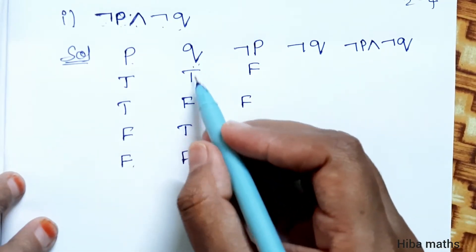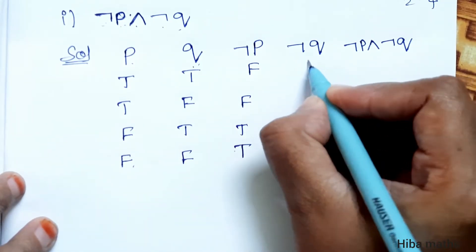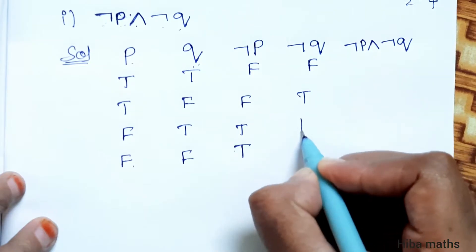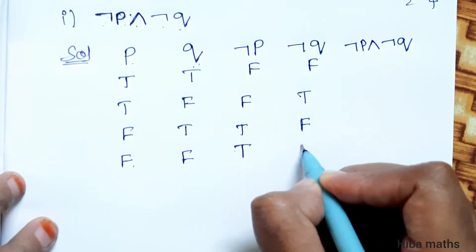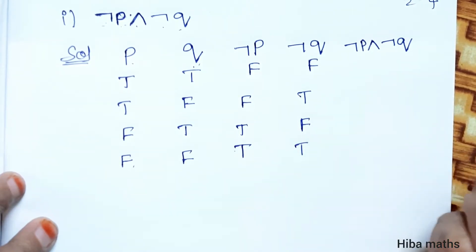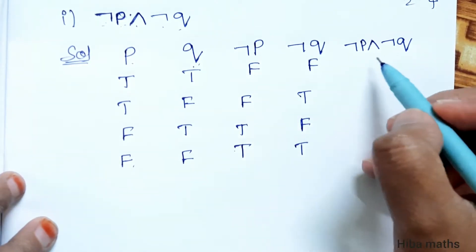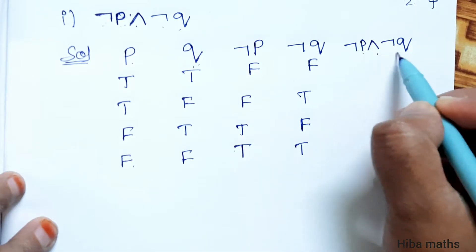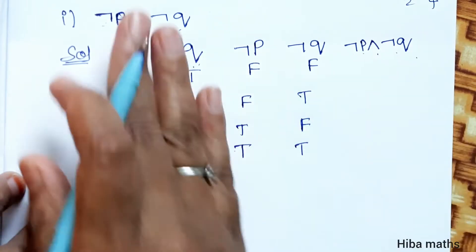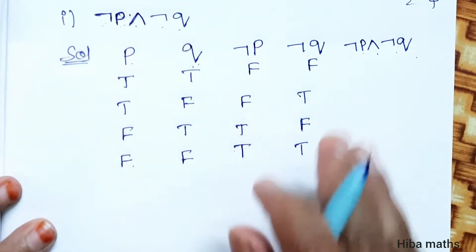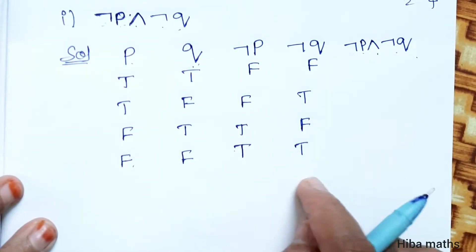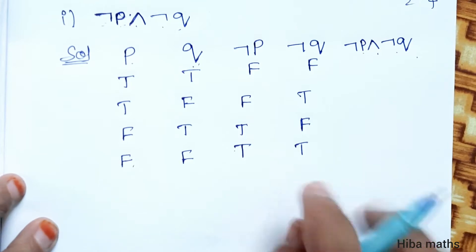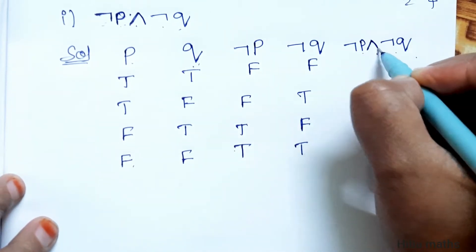NOT of Q: true, false, false, true — true, false, false, true. Now the last statement is NOT P AND NOT Q. This is the AND of NOT P and NOT Q.